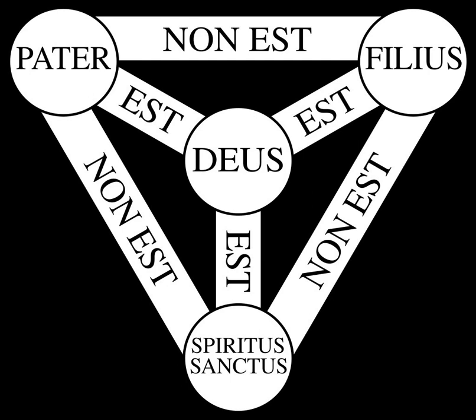The Shield of the Trinity is not generally intended to be any kind of schematic diagram of the structure of God, but instead is merely a compact visual device from which the above statements — contained in or implied by the Athanasian Creed — can be read off.